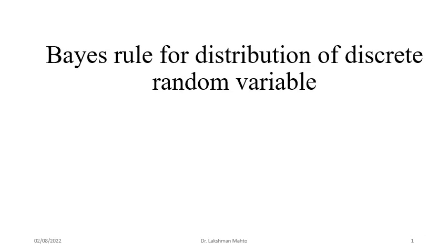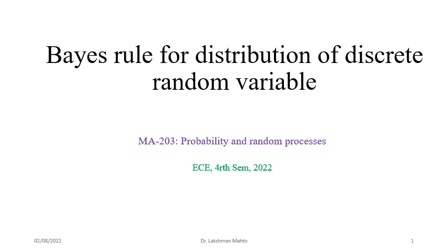Here we will discuss in detail about Bayes rule for distribution of discrete random variables. We had already seen that Bayes rule for probability is one kind of restatement of conditional probability. Similarly, we will see it here in the process of defining Bayes rule for discrete random variable distribution and various applications. The previous lecture was about computation of joint probability mass function, and this lecture is all about Bayes rule for distribution of discrete random variables.